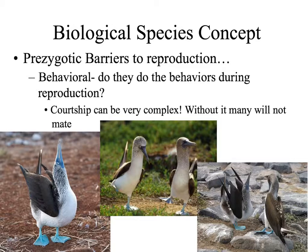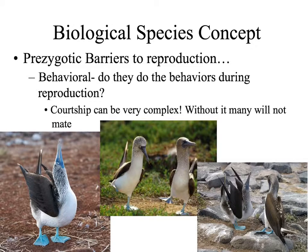The third type of prezygotic barrier is behavioral isolation — do the behaviors of these organisms match? One interesting example is courtship displays seen in birds. Birds are notorious for their dances, and if they do not have the correct dance, they will not be able to reproduce with the female. One example are the blue-footed boobies found in the Galapagos Islands. These birds start their dance by showing off their bright blue feet. If the female is interested, she will stick around. The male then starts to posture, flipping his wings forward and pointing his head and tail at the sky. If the female likes what she sees, she will start to dance as well, showing off her feet and posturing back to the male. Many different seabirds have dances used as courtship — if this dance does not match exactly what the female is looking for, she will ignore the male and reproduction will not occur.